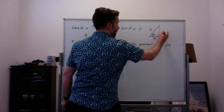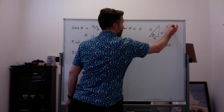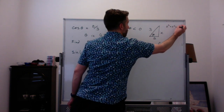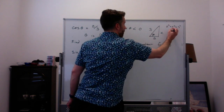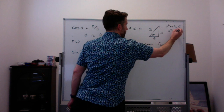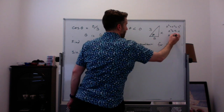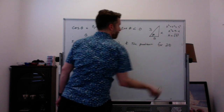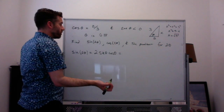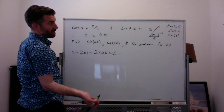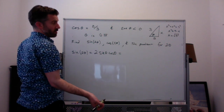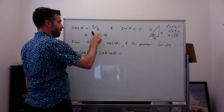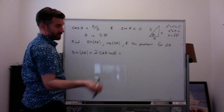Cosine of theta is adjacent over hypotenuse, which is two-thirds. We can find the third side — call it x — using the Pythagorean theorem: 2 squared plus x squared equals 3 squared. x squared equals 9 minus 4, so x equals the square root of 5. Sine of theta is going to be negative square root of 5 over 3, because theta is in quadrant 4.